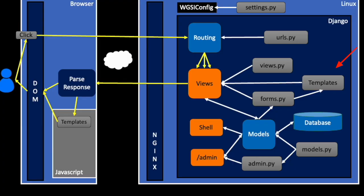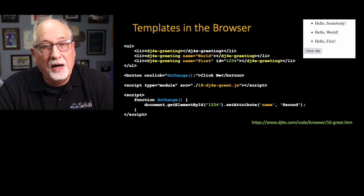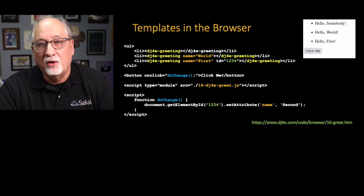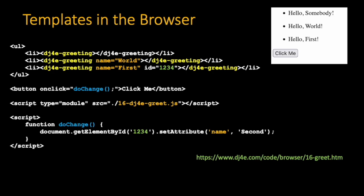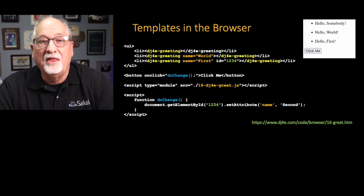What we're going to do now is take a little tiny bit of that template processing and move it into the browser. We're still going to have a server-based template, but we're also going to have a little tiny template in the browser. We're doing this by creating our own tag. We have a tag — it says 'less than djfree-greeting greater than' — that's a tag we invented. We can pass parameters and attributes. There's a button that says 'click me,' and the script with type equals module and source equals './16-djfree-greet.js' is the code that adds the djfree-greeting tag to the browser.